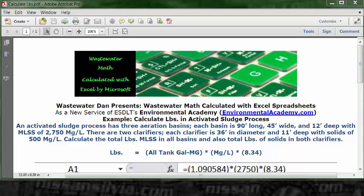with solids of 500 mg/L. Calculate the total pounds of MLSS in all basins and also total pounds of solids in both clarifiers. This is a standard poundage calculation problem for a tank, so we will be using